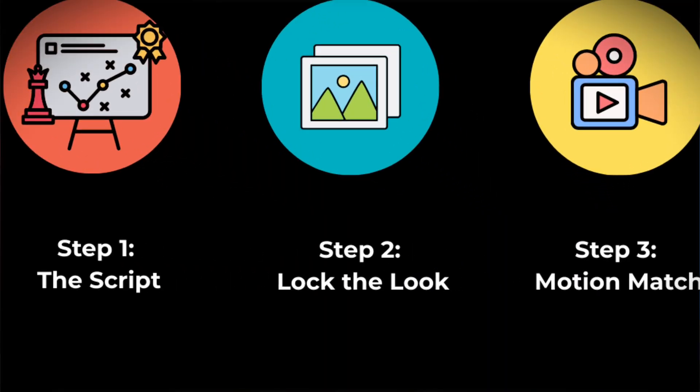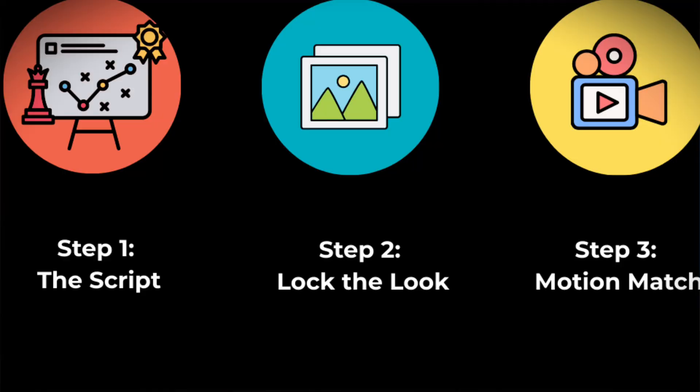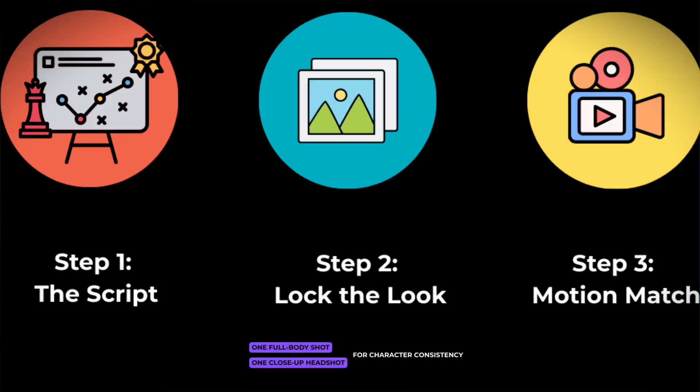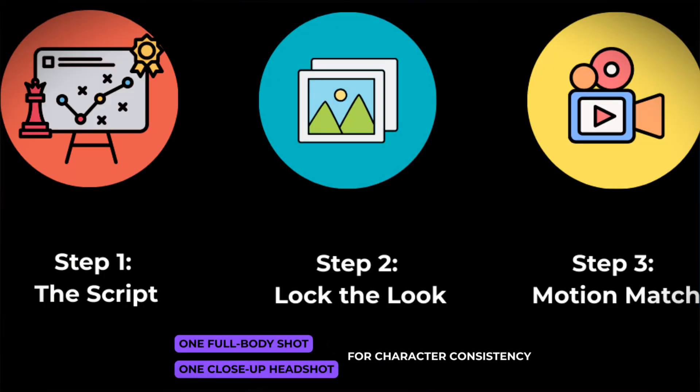Step two is locking your character, and this is the part most people skip. The key is defining a strong base image first, because that's what keeps your character consistent across every scene. Ideally, generate one full body shot and one close-up headshot so the face stays locked. Those two references usually do the best job for consistency. For this step, you can use the new ChatGPT image model or Nano Banana to generate those base images before you start animating anything.